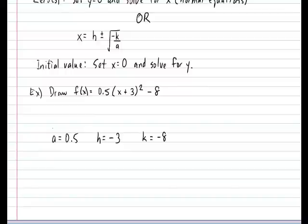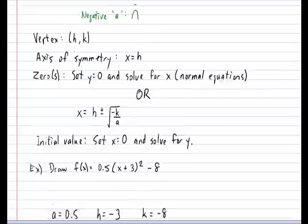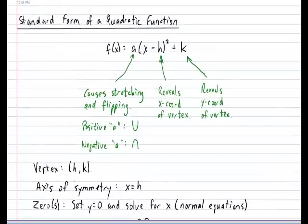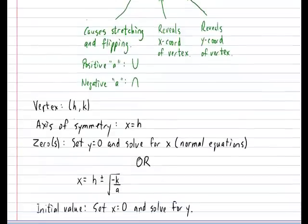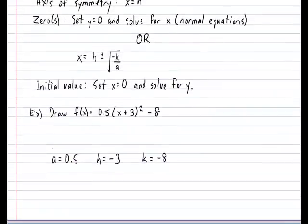The rule in standard form is written a multiplied by x subtract h all squared plus k. Now let's go back to our example. Notice that what is being displayed is x plus 3, but in standard form inside the bracket is normally x subtract h.